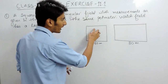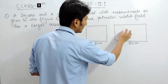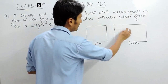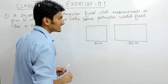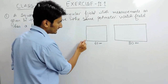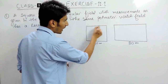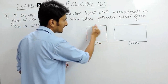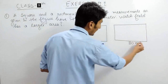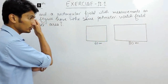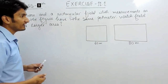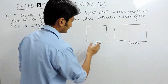You are given a square field and a rectangular field and the perimeter of these fields are equal. The perimeter means these outer boundaries — the length of these outer boundaries are equal. You have to find which field has greater area.